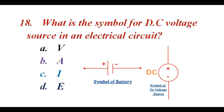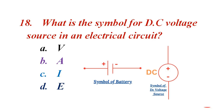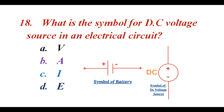What is the symbol for a DC voltage source in electrical circuits? A. Volt. B. Ampere. C. Current. D. V, which stands for voltage. The correct answer is V, which stands for voltage.